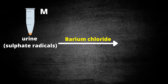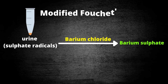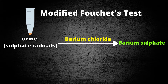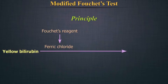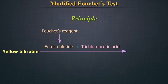Principle: When barium chloride reagent is added to urine, it combines with sulfate radicals in urine and a barium sulfate precipitate is formed. If bile pigments are present in urine, they will adhere to these large molecules. Ferric chloride present in Fouché's reagent then oxidizes yellow bilirubin, in the presence of trichloroacetic acid, to green biliverdin.